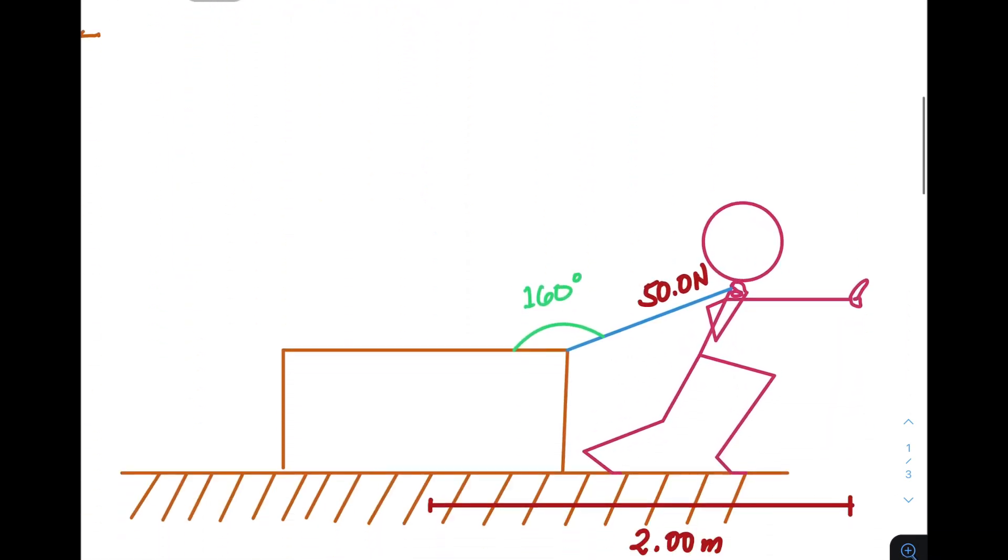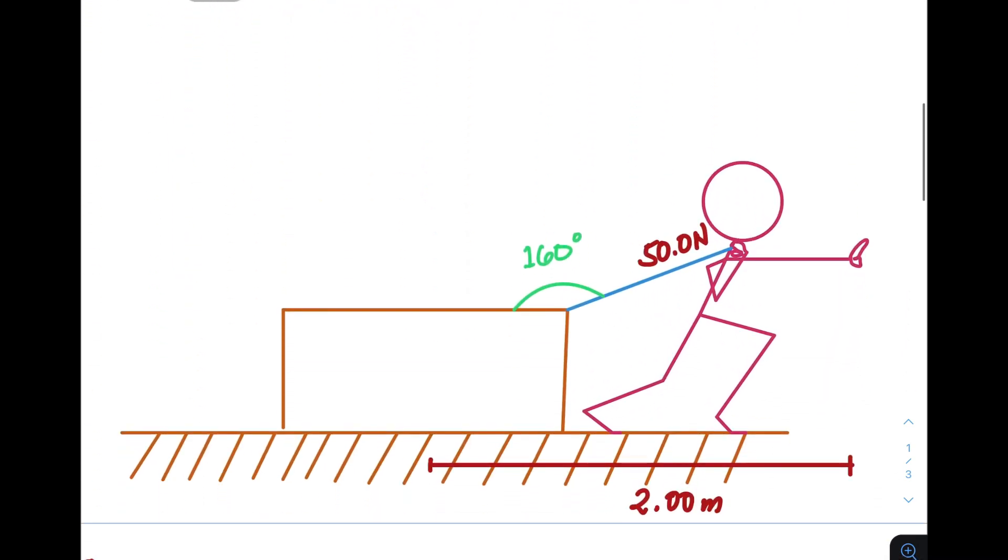So let's have our first example. In this figure, we see a person who is applying a total of 50 newtons using a rope with an angle of 160 degrees from the surface of the object, which is parallel with the ground. And during his work, he was able to pull the object 2 meters. So how much work did the person apply?